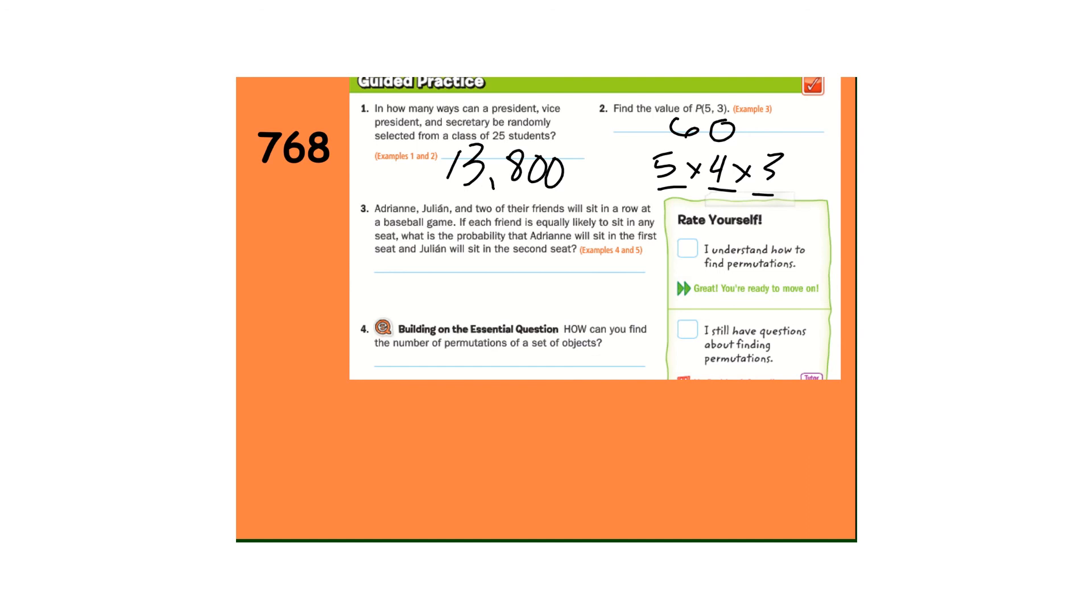Number three. Adrian, Julian, and two of their friends. So there's four people. They're going to sit in a row at a baseball game. If each friend is likely to sit in any seat, what is the probability that Adrian will sit in the first seat and Julian will sit in the second? Four times three. We only need two seats that they're talking about. Twelve, what's the probability? One twelfth.